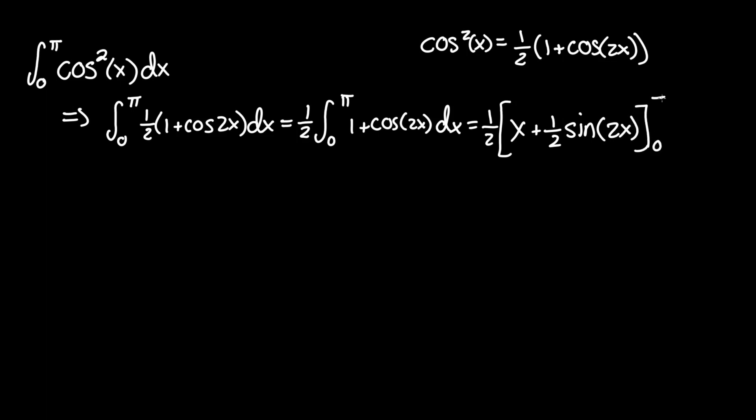We put our boundaries now between zero and pi and evaluate this. This equals one half times the upper boundary of pi: x becomes pi plus one half sine of two pi, minus the lower zero boundary: x becomes zero plus one half sine of two times zero, which is just zero.